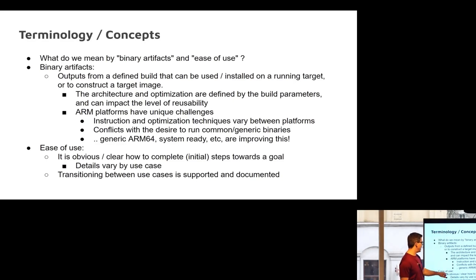Ease of use is how it's easy and obvious to complete your initial step, meaning how do I get an image on a board, how do I boot it, how can I update it? If the next part of your ease of use journey is I need to add a package or an editor like Vim or Nano onto the target, is there an obvious way? Continuing that ease of use journey: how would I rebuild the image, how would I rebuild some of it? Is there a well-documented and defined path between the different stages?